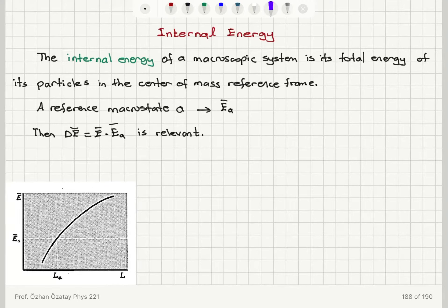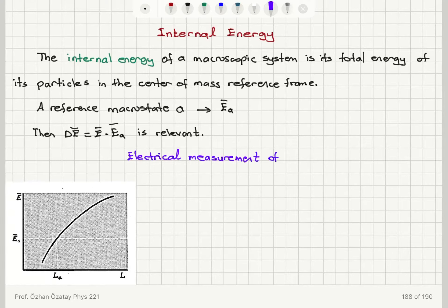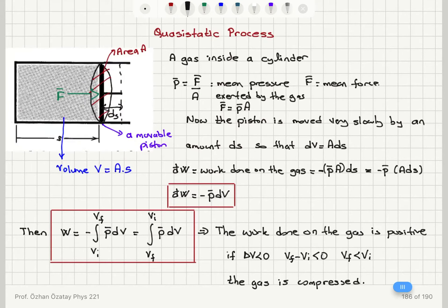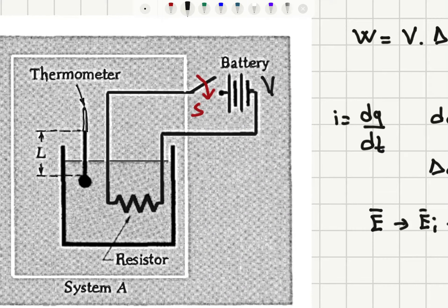If we want to measure changes in internal energy, one approach is an electrical measurement. This is essentially what we discussed in the electrical work example, where we determine the electrical work done on a system. In that example, we have a thermometer and we read the length of the column.